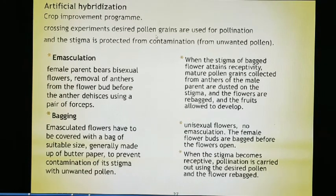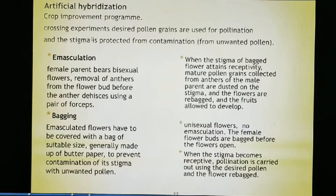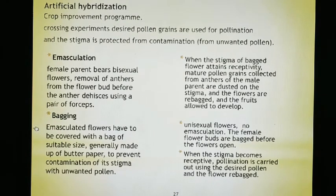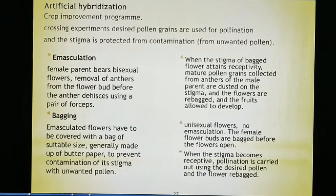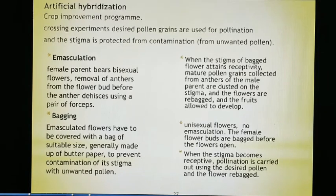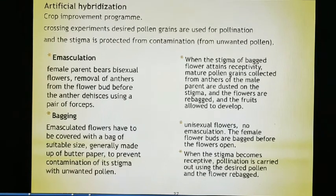In crossing experiments, desired pollen grains are used for pollination and the stigma is protected from contamination from unwanted pollen. This is artificial hybridization — a manmade hybridization that provides particular controlled conditions. A major role in this process is played by emasculation and bagging. Emasculation is a very important key term — it may come as a two or three mark question in your board examination.